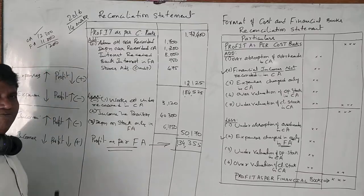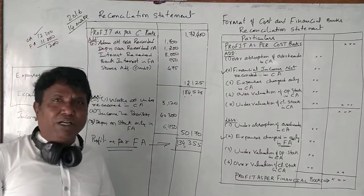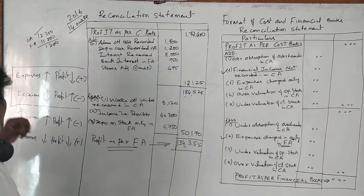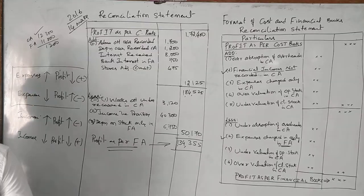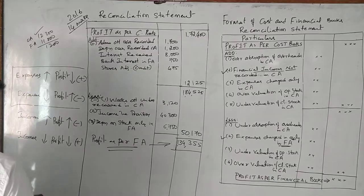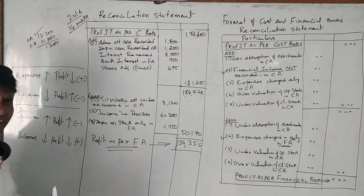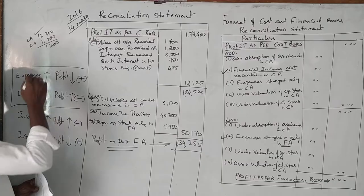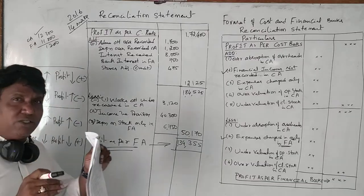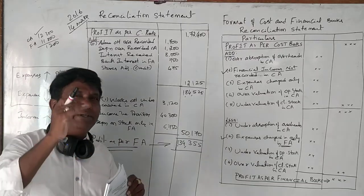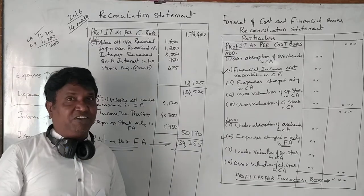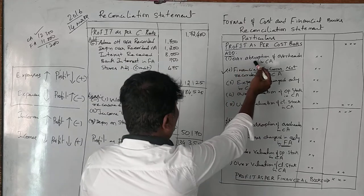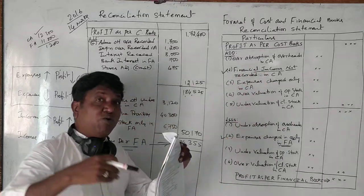Different methods such as straight-line method or diminishing balance method may be used. In cost accounting, depreciation is already required to be adjusted for the charge. It is over-absorbed, meaning over-recorded.